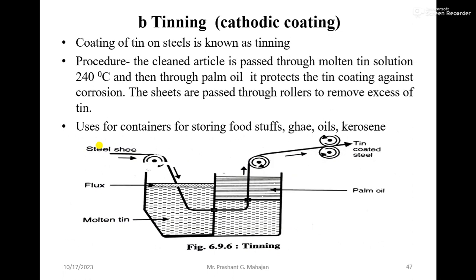Tinning is an example of cathodic coating where tin is coated on an iron sheet. The molten tin is kept at 240°C. The clean article is passed through the molten tin solution, then through palm oil. A flux is used to prevent oxidation of the molten tin, and palm oil is used for better adhesion of tin and to protect the metal from further corrosion.